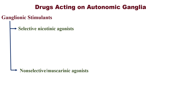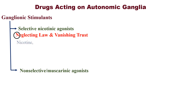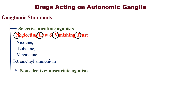Who will stimulate the criminal gang? Those who are neglecting law and vanishing trust will do that. Remember this mnemonic for selective nicotinic agonists — Neglecting Law and Vanishing Trust: N for Nicotine, L for Lobeline, V for Varenicline, T for Tetramethylammonium.